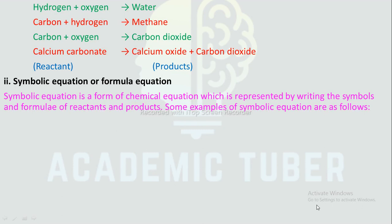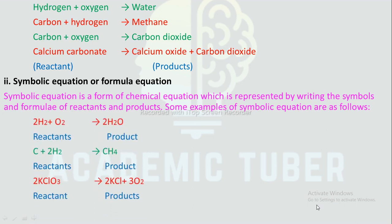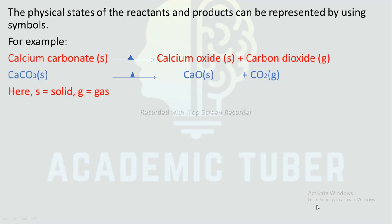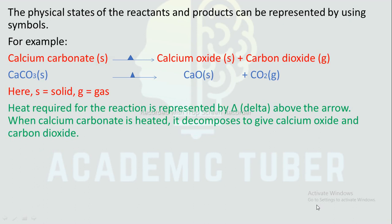Symbolic equation or formula equation is a form of chemical equation represented by writing the symbols and formula of reactants and products. Examples: 2H₂ + O₂ → 2H₂O; C + 2S₂ → CS₄; 2KClO₃ → 2KCl + 3O₂. The physical states of reactants and products can be represented using symbols, for example (s) means solid and (g) means gas. Heat required for the reaction is represented by delta above the arrow. When calcium carbonate is heated it decomposes to give calcium oxide and carbon dioxide.